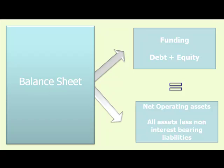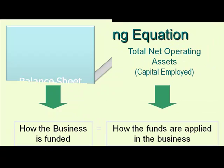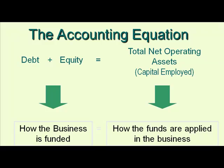Then we look at the net operating assets, which are essentially all the remaining items in the balance sheet — namely the total assets less all those liabilities that do not have any carrying cost associated with them. This puts us in a position to compare how we fund the business and how we use those funds, allowing us to compare the cost of funds versus the return we're getting on those net operating assets.